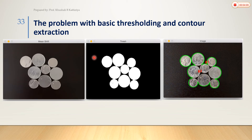The problem is that when our image has connected or overlapping components, the boundaries are merged — they are joined together. So what can we do in this situation?